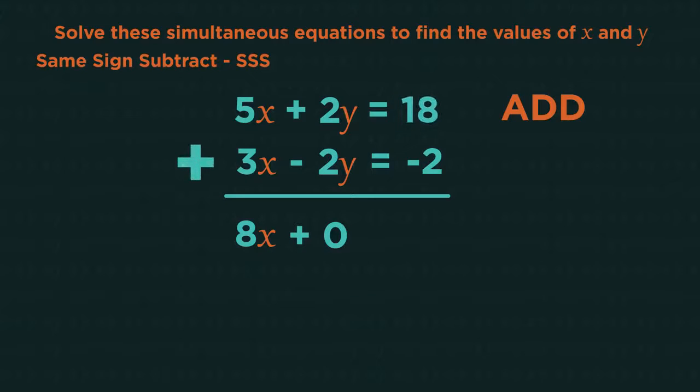18 add minus 2 is 16. So 8x equals 16. Solve for x, so divide both sides by 8, and x is 2.